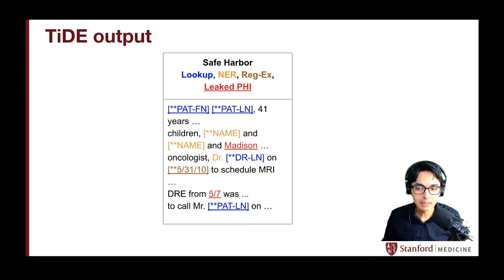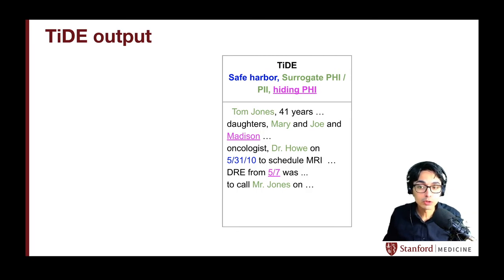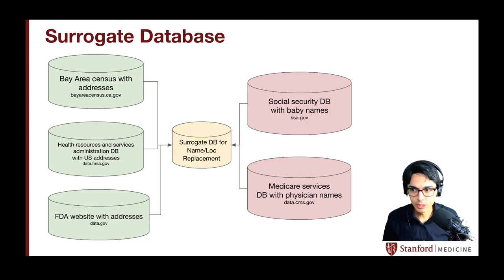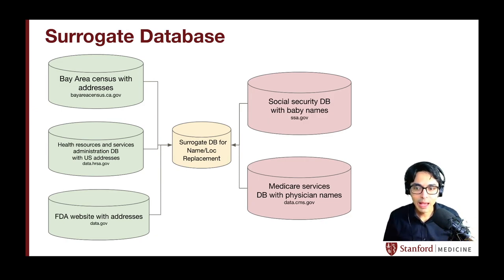But with masking, it is easy to distinguish the information that leaked through. What happens instead if we use surrogates? Then the information that leaked looks just like any of the other information that is there. It's very difficult to assess that 'Madison' is actually a leaked name — it just looks like all the other fake names, and the dates just look like the other dates. Where do we get those names? We use public databases: the Bay Area Census for addresses, and the Health Resources and Services Administration database. We collect and curate those databases to produce a curated surrogate database for names and locations.